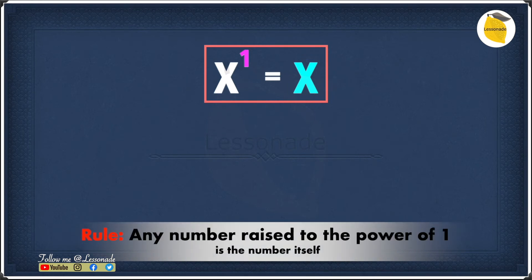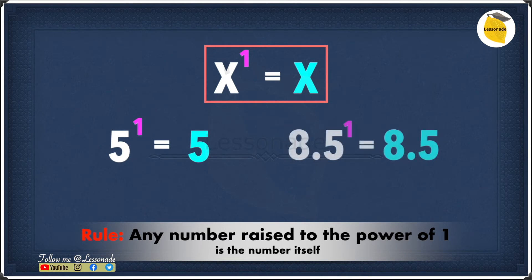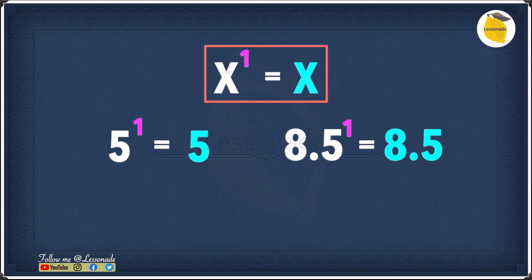Let's look at a couple of examples. 5 to the power of 1 is just 5, and 8.5 to the power of 1 is just 8.5. As you can see, any number raised to the power of 1 will just be itself.